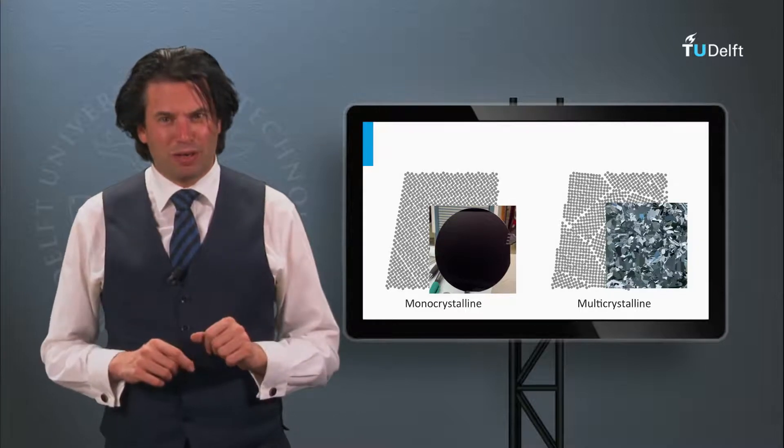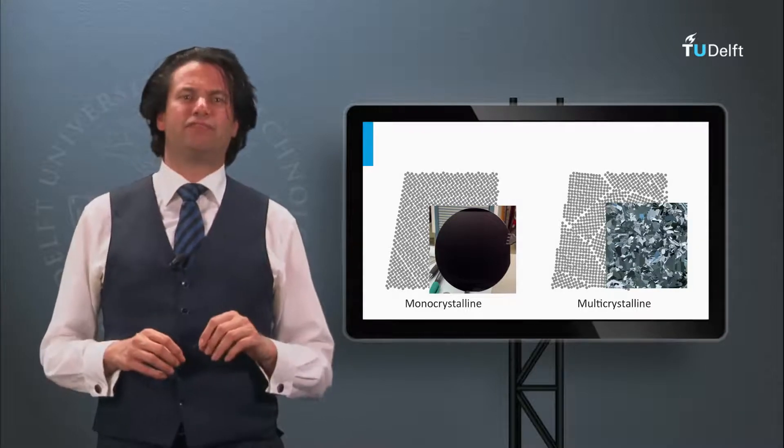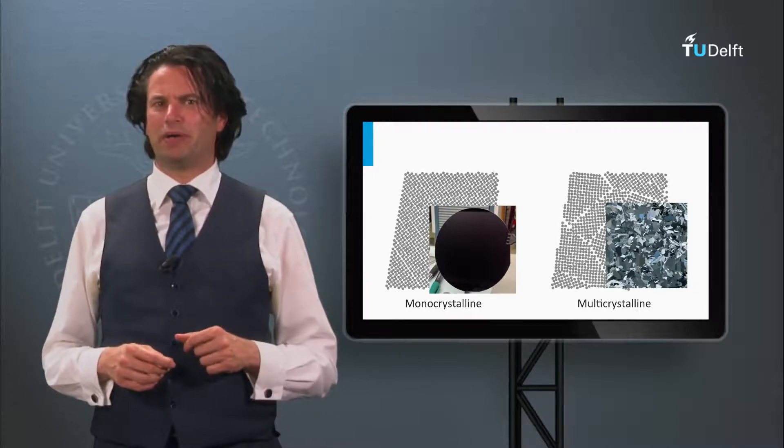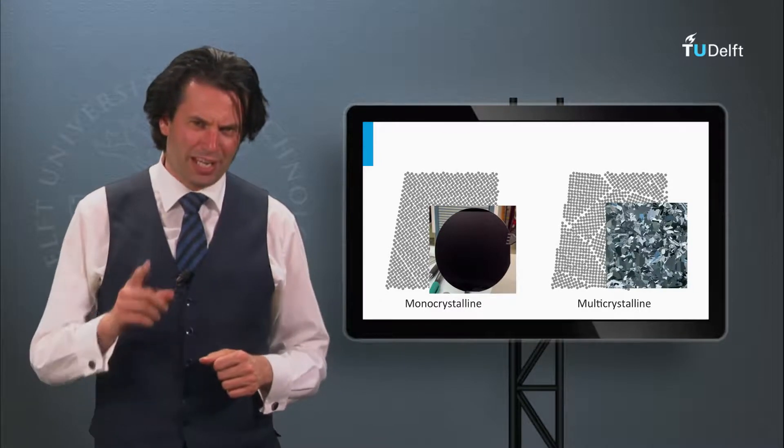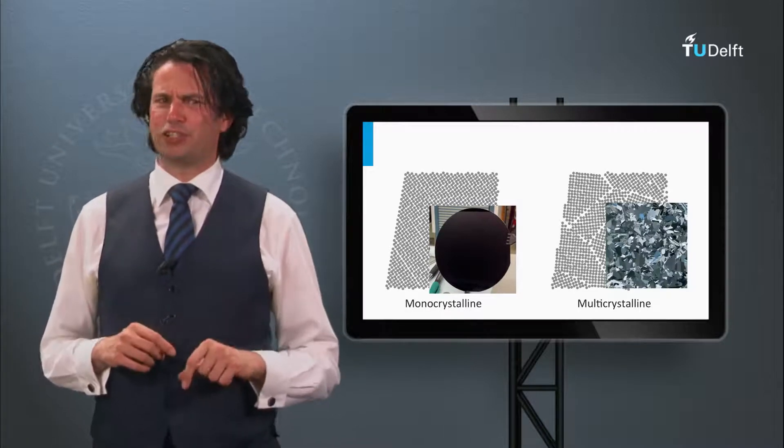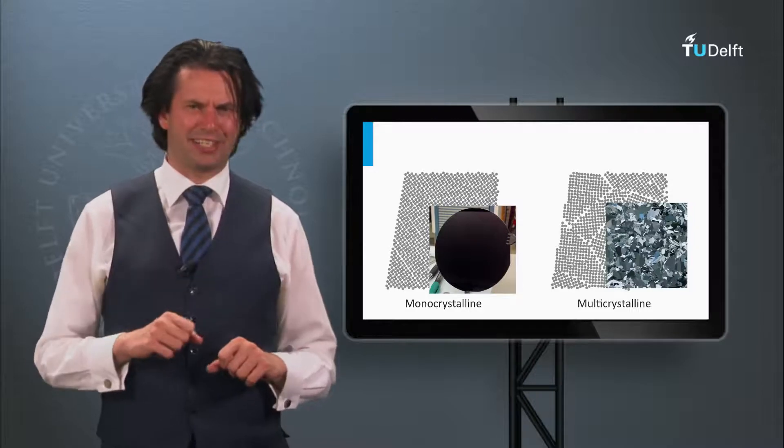In the previous block we discussed various technological aspects on crystalline silicon wafer-based PV technology. In this block I will give you three examples of highly efficient solar cells based on crystalline silicon wafers.